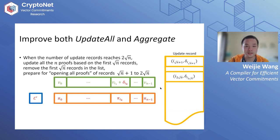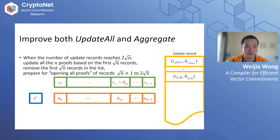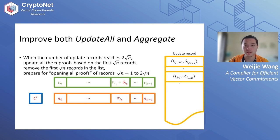At that point, we prepare for the next round of the open-all algorithm for the following sqrt(n) parts. The single proofs are now updated for the first sqrt(n) updates, so we can clear those records from the list. Anytime we want a single proof, we extract it from the updated base and apply the remaining update requests in the current list to get the latest proof.